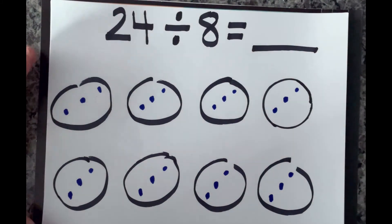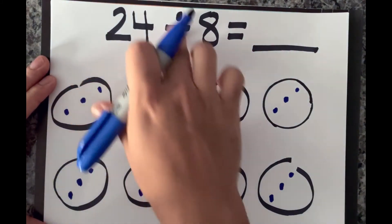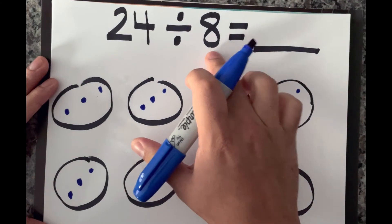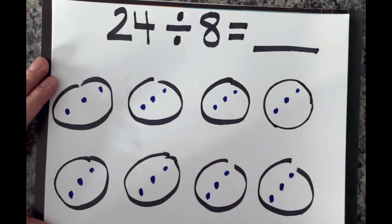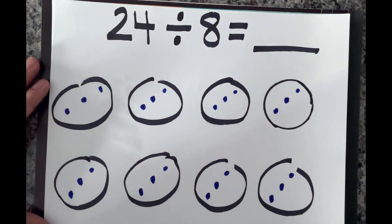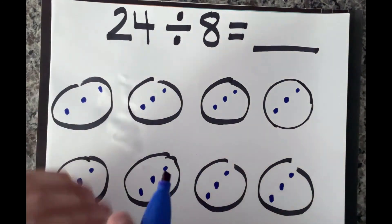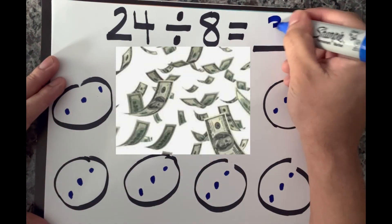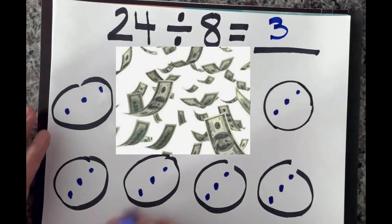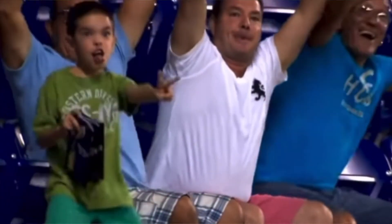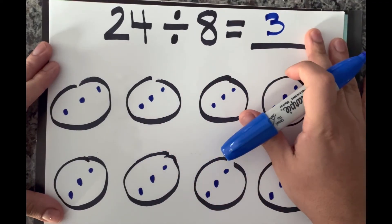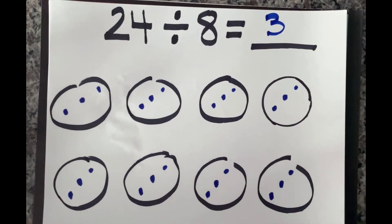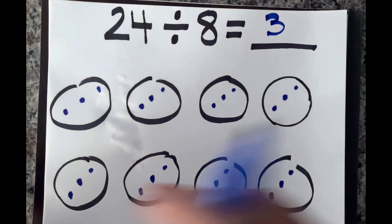All right, so now we know that we split up 24 bucks. If we have 24 dollars and we can give it between eight kids, each kid is going to get how much? Well, let's count inside: one, two, three. So each child receives three, and now we know what our quotient is. So 24 divided by 8 equals three.